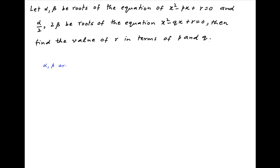We are given that alpha and beta are the roots of the equation x squared minus px plus r is equal to 0. Therefore, the sum of the roots alpha plus beta is equal to p, and the product of the roots alpha beta is equal to r. Let's denote these results by 1 and 2 respectively.